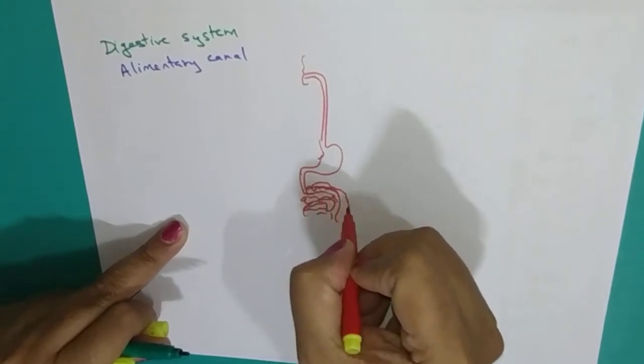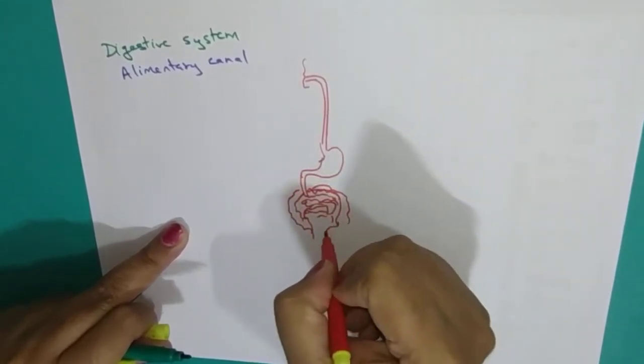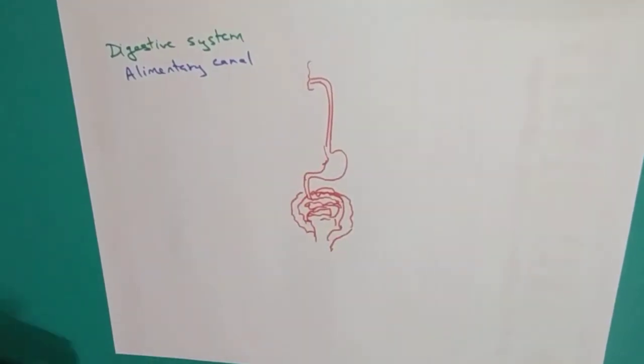After the small intestine, you will find the part that is called as large intestine. Let us see the names of these parts.